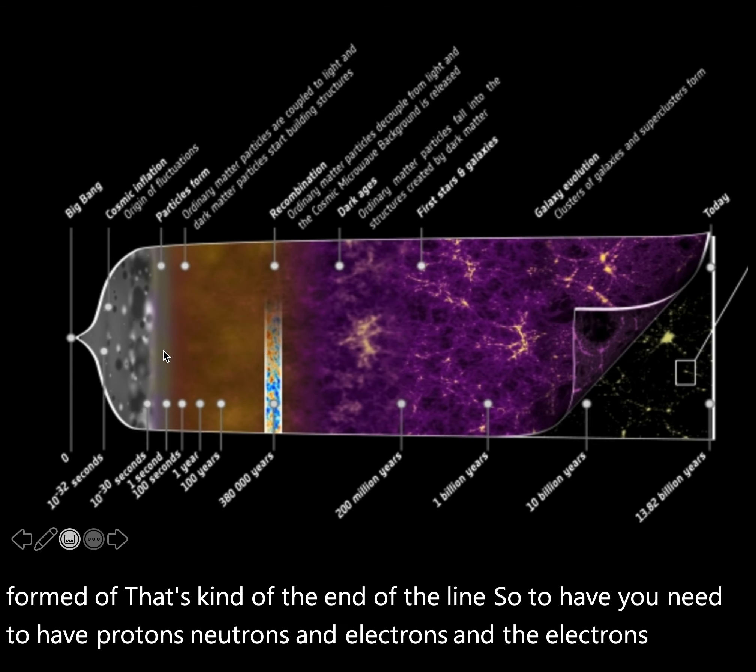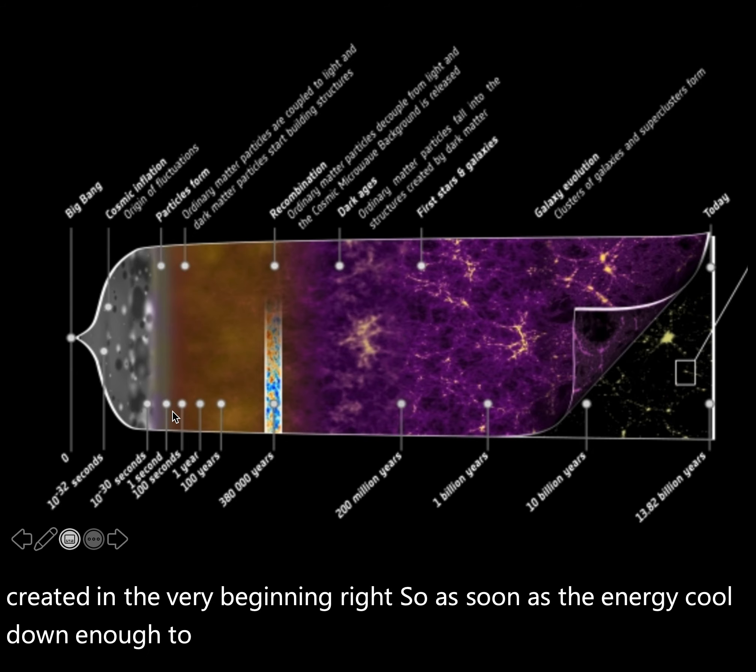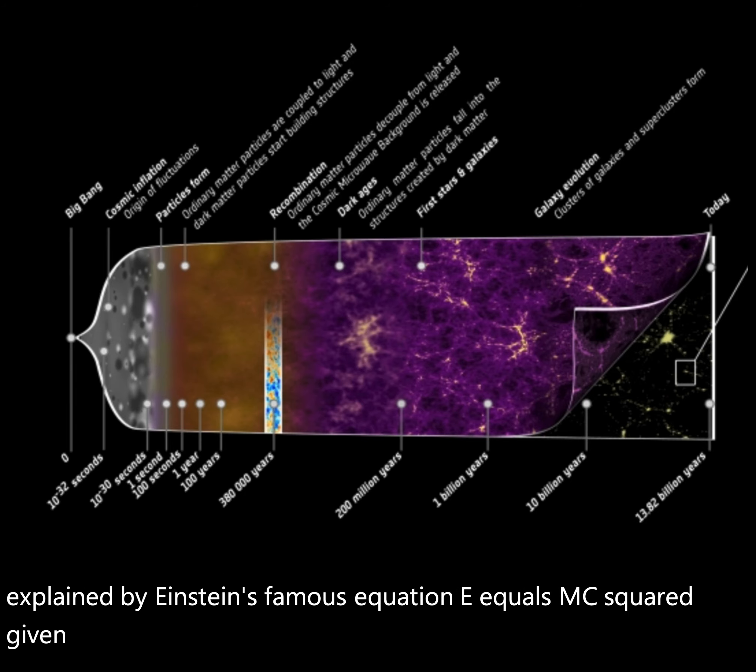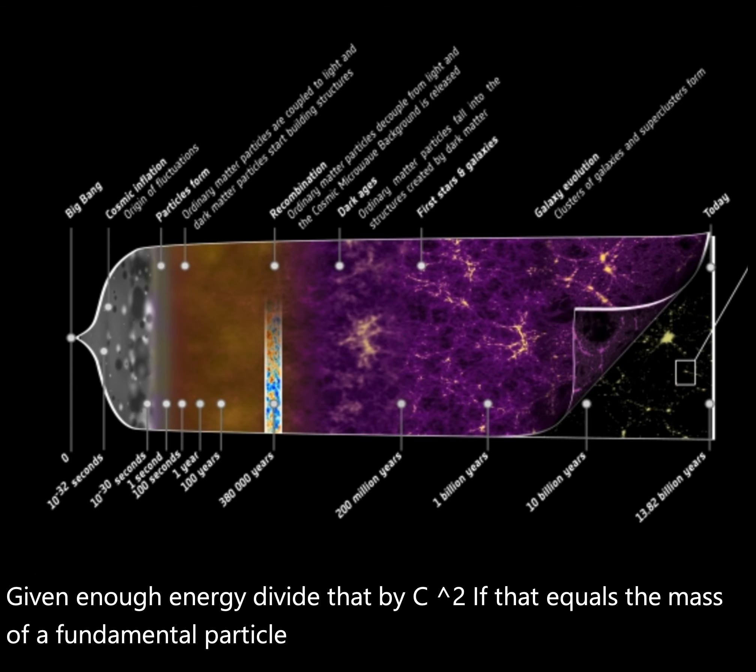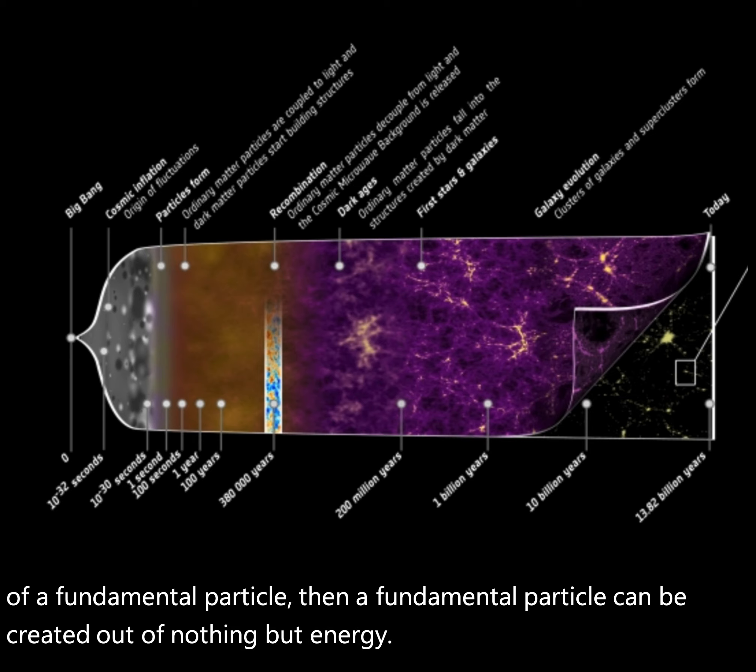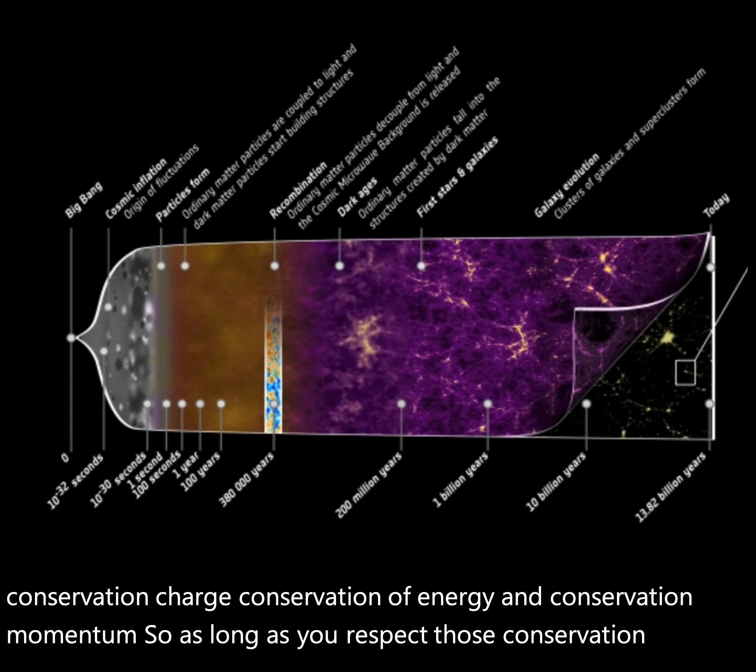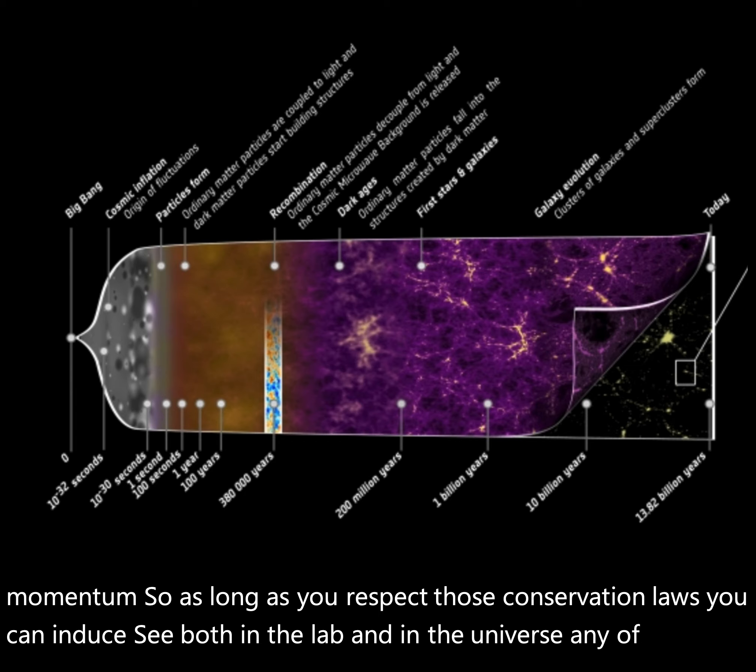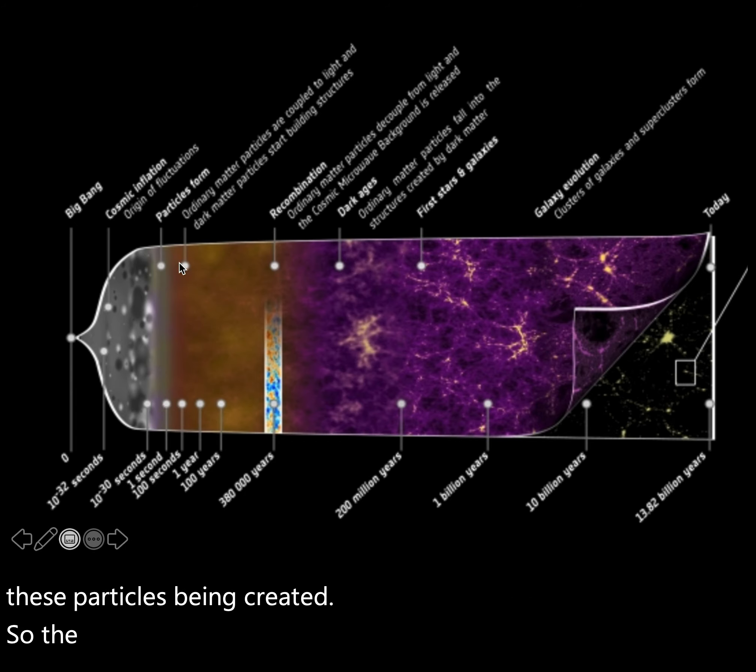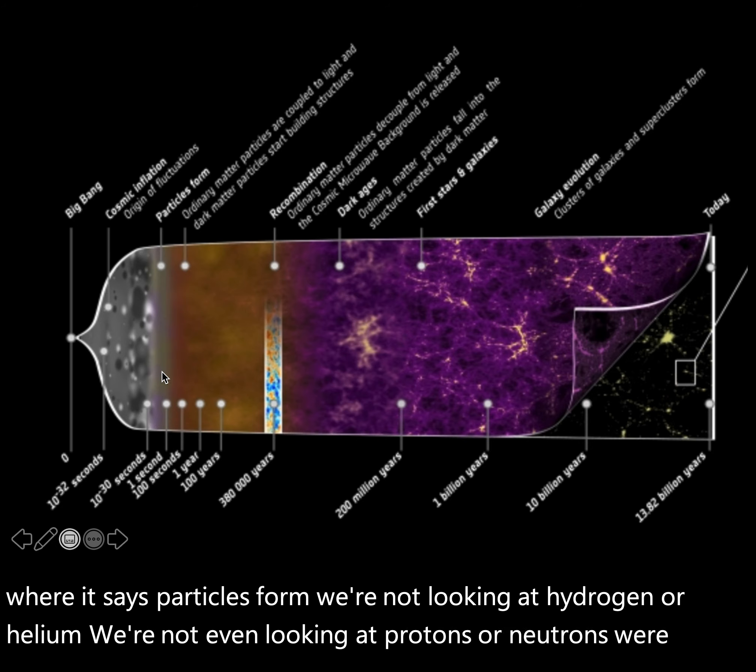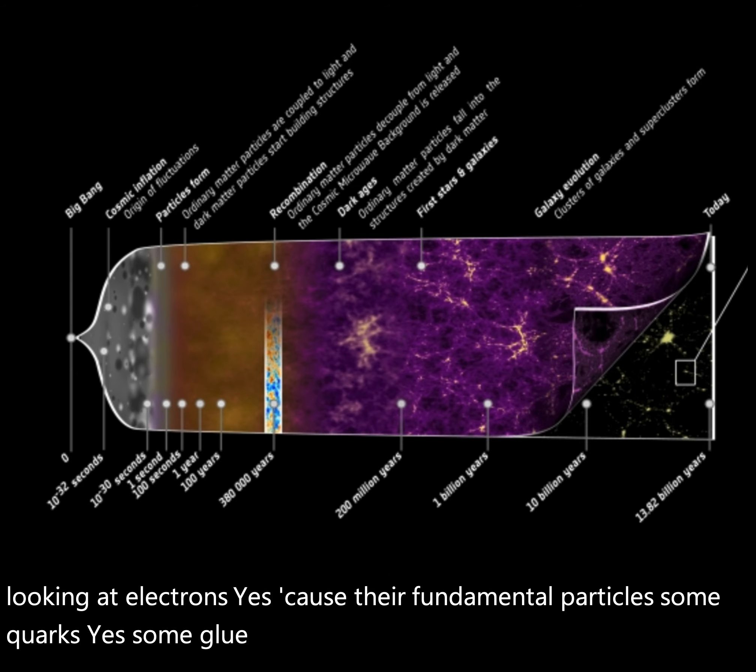And so when you're going back towards the origin event here, further to the left, helium and hydrogen, those atoms that everything else in the universe is formed of, that's kind of the end of the line. So to have those, you need to have protons, neutrons, and electrons. And the electrons were created in the very beginning. As soon as the energy cooled down enough to start forming particles, which is a process we do understand, that's explained by Einstein's famous equation, E equals mc squared. Given enough energy, divide that by c squared. If that equals the mass of a fundamental particle, then a fundamental particle can be created out of nothing but energy. The only thing you have to respect are the conservation laws: conservation of charge, conservation of energy, and conservation of momentum.